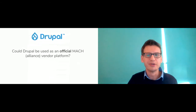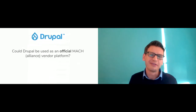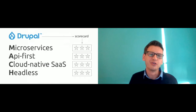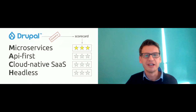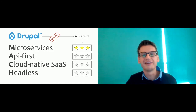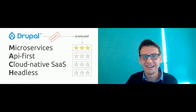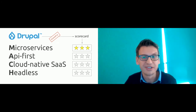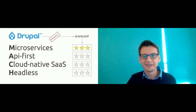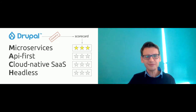The application form has requirements: your platform must have at least three different microservices, plus business model requirements like employee count, whether you offer SaaS, and even revenue thresholds. They have requirements well beyond the technical scope. Could Drupal be an official MACH Alliance vendor? Probably not — but let's see how far we can get building a Drupal software-as-a-service platform using MACH principles. I made a scorecard: three stars means full marks for a given principle.